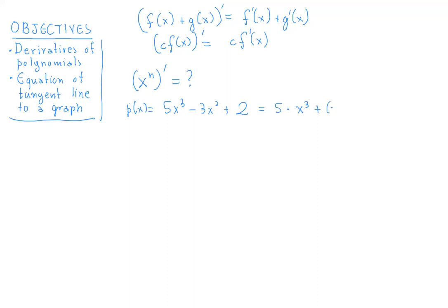You can think of that polynomial as 5 times x³ plus negative 3 times x² plus 2. So all you need to know is what the derivative of x³ is, what the derivative of x² is — then multiply by 5, multiply the derivative of x² by -3, and add the derivative of 2. We said that the derivative of a constant function is simply 0, so you don't have to add anything for that term.